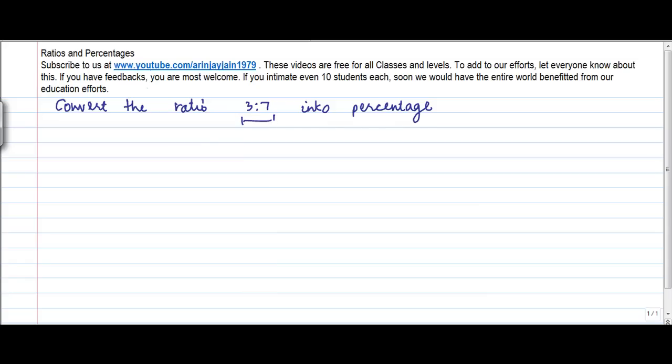So basically you are given 3 is to 7. You can also write this as 3 and 7. Now normally when you are given these two, what does this mean?